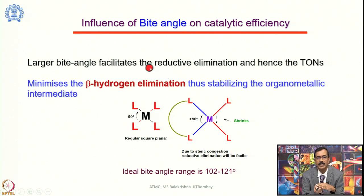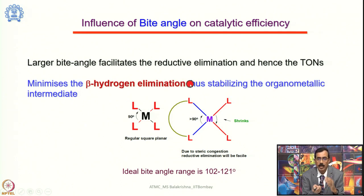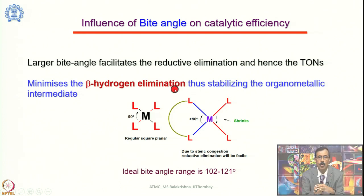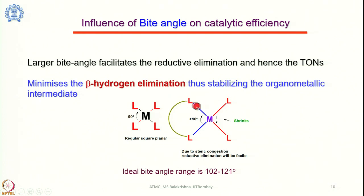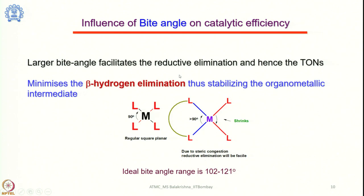Larger bite angle facilitates reductive elimination and hence increases turnover numbers. Another advantage is that if alkyl groups with beta hydrogen atoms are present, a larger bite angle can minimize beta hydrogen elimination, because it does not give scope for expansion of the coordination number of the metal. It can also increase the stability of metal complexes, especially organometallic compounds.